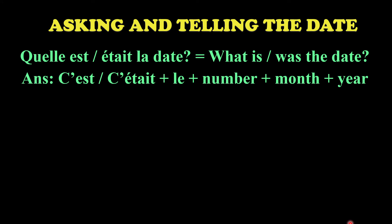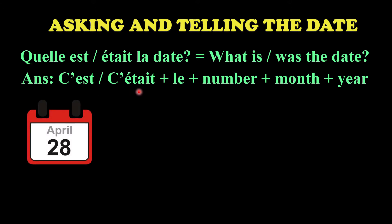Now, how do you answer that question - how do you tell someone the date? If you're talking about the present, you say 'c'est le' followed by the cardinal number, then the month. Quick reminder: when you write the month in French, the first letter is always small, not capital. Then you write the year. If you're talking about a date in the past, you say 'c'était le', then the number, month, and year.